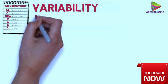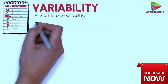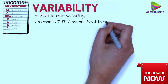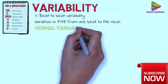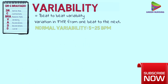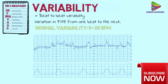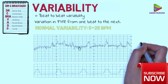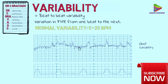So next we've got variability, also referred to as beat-to-beat variability, which is the variation in the fetal heart rate from one beat to the next. The normal variability range is from 5 to 25 beats per minute. Looking at this CTG, we're looking at how much the trace is moving up and down along the baseline. This CTG has good beat-to-beat variability, certainly greater than 5 beats per minute. Normal variability indicates an intact neurological system in the fetus, and is a good indicator of how healthy a fetus is.